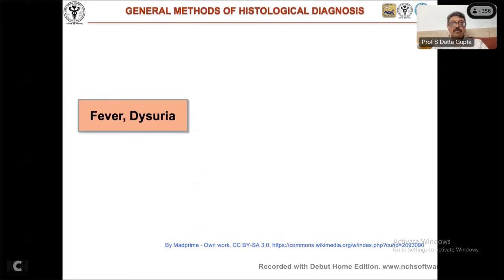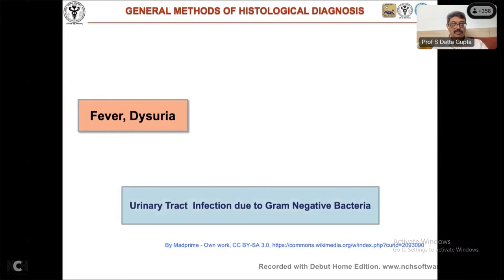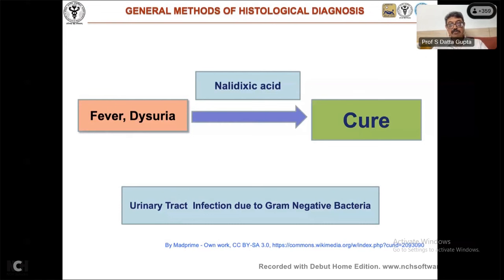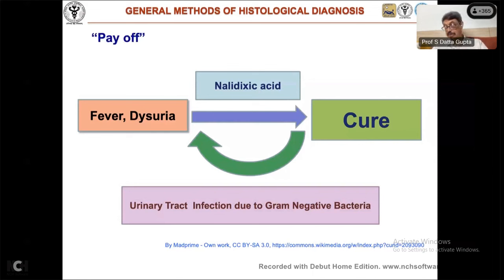There are two or three ways we use for diagnosis. A clinician finds a patient with fever and dysuria, thinks urinary tract infection, the commonest is a gram-negative bacteria, gives an antibiotic. If the patient is cured, the diagnosis is explained. Sometimes the patient becomes better before the culture and sensitivity report comes. This is called a payoff — often called a gut feeling, but it's generally the result of a lot of experience.